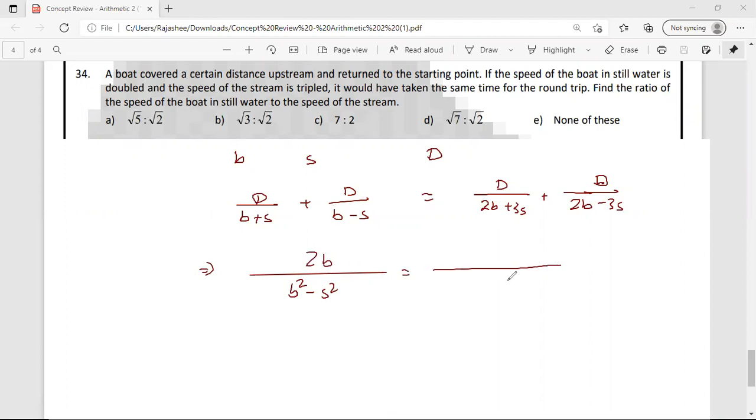And this will be like 4B square minus 9S square. 3S, 3S will cancel 4B.